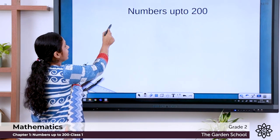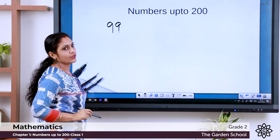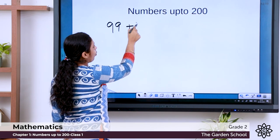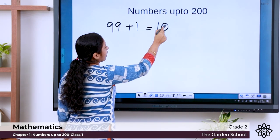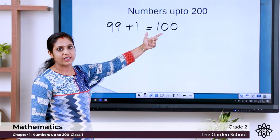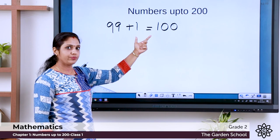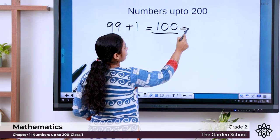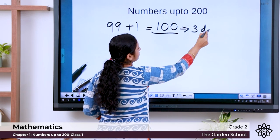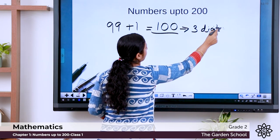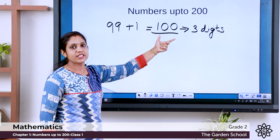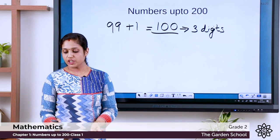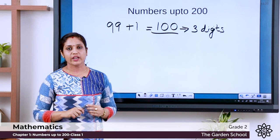Now, what happens after 99? What is the number after 99? We know: 99 plus 1 becomes 100. How many digits are there in 100? Is it two digits? Is it one digit? No — there are three digits in this number. So from 100, the three-digit numbers start.